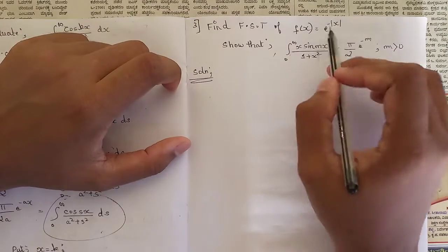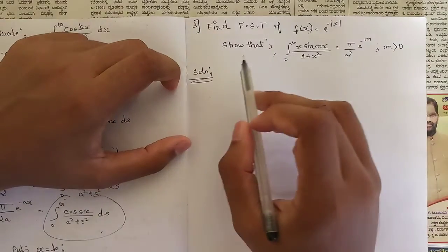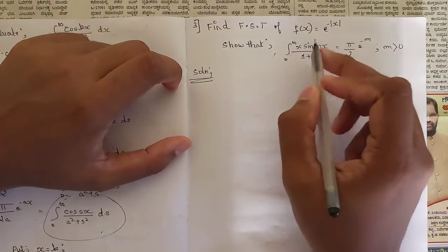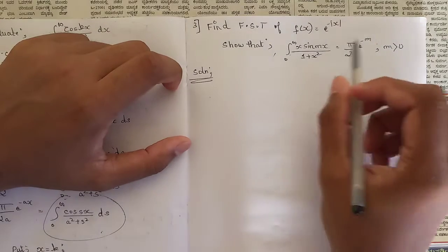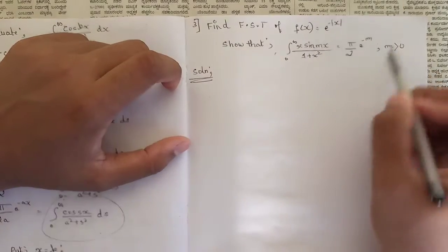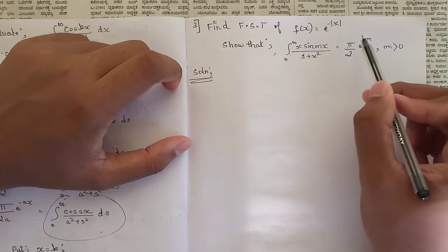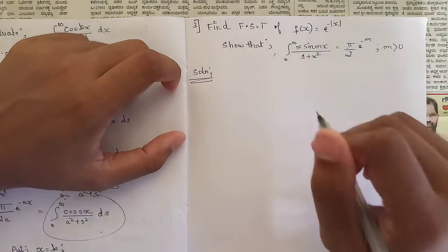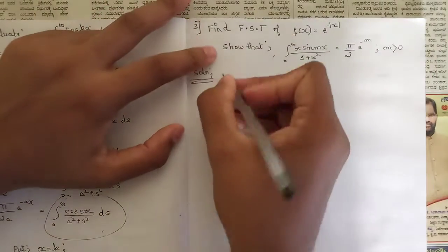f(x) is given as e to the power minus |x|, and we also need to show that the integral from zero to infinity of x·sin(mx) divided by (1 + x²) is equal to π/2 · e^(-m), where m is strictly greater than zero.